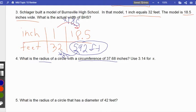Well, they're using words radius and circumference. So I'm going to write down my CARD acronym. I want to find the radius. They're giving me the circumference, which is 37.68 inches.